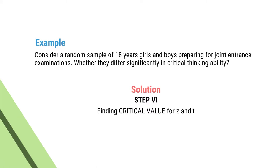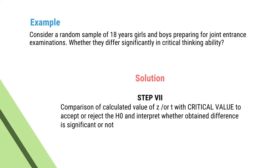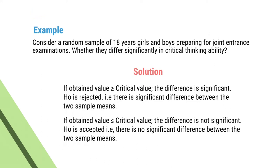Step 6: Find the critical value from the table — from the z-table for z values and from the t-table for t values. Step 7: Compare the calculated value with the critical value. If the calculated value is greater than or equal to the critical value, the difference is significant and the null hypothesis is rejected. If the calculated value is smaller than or equal to the critical value, the difference is not significant and the null hypothesis is accepted, indicating no significant difference between the two sample means.